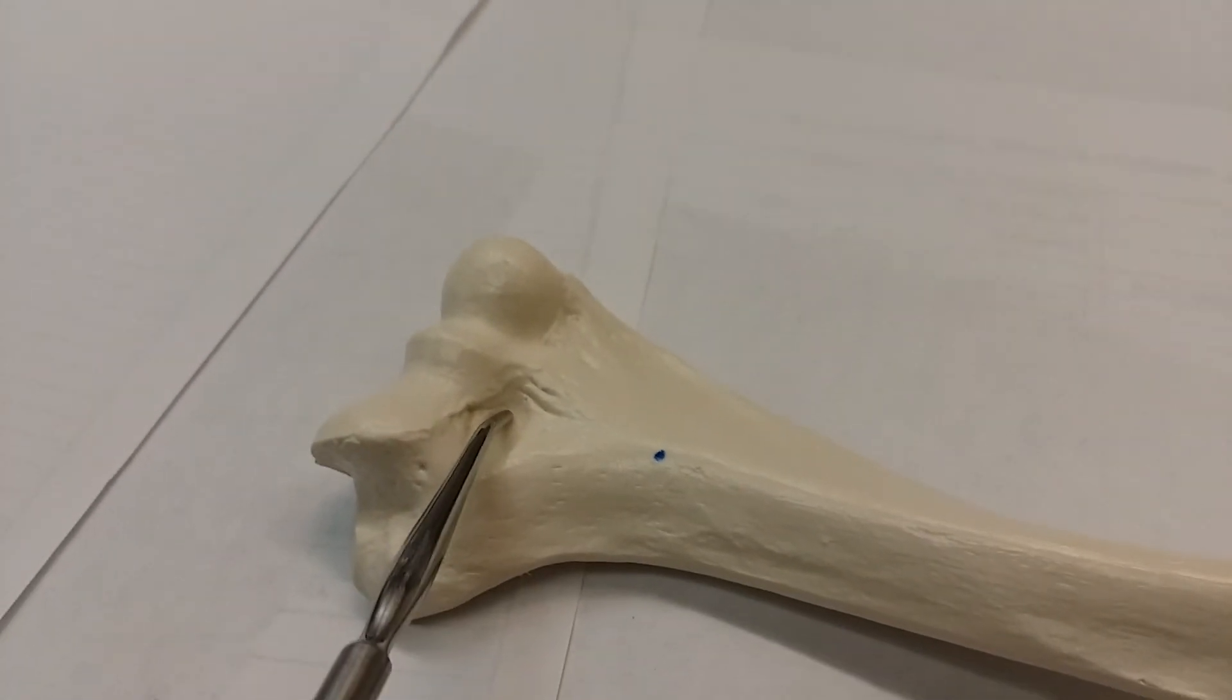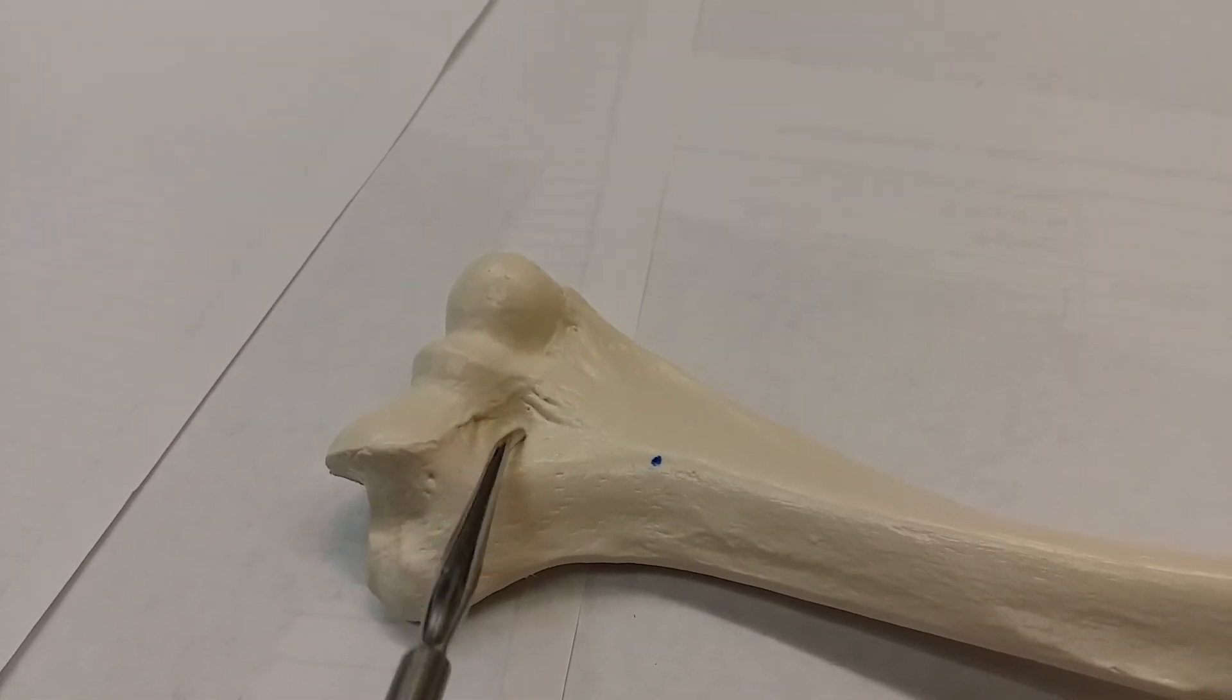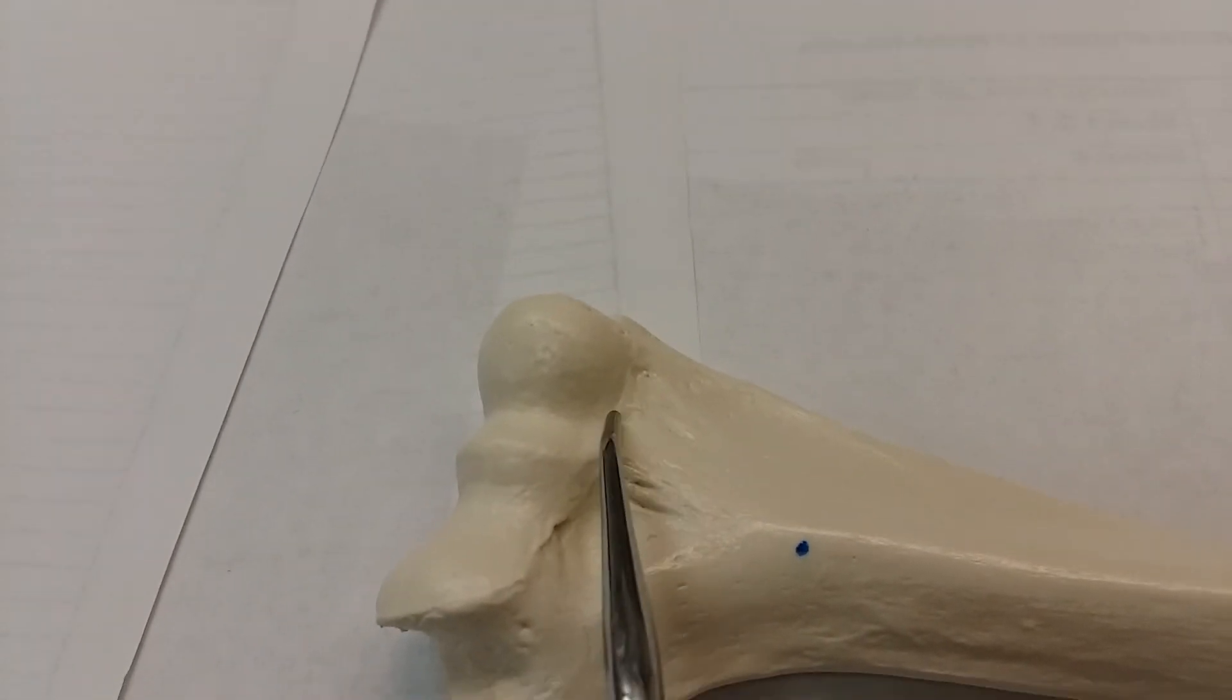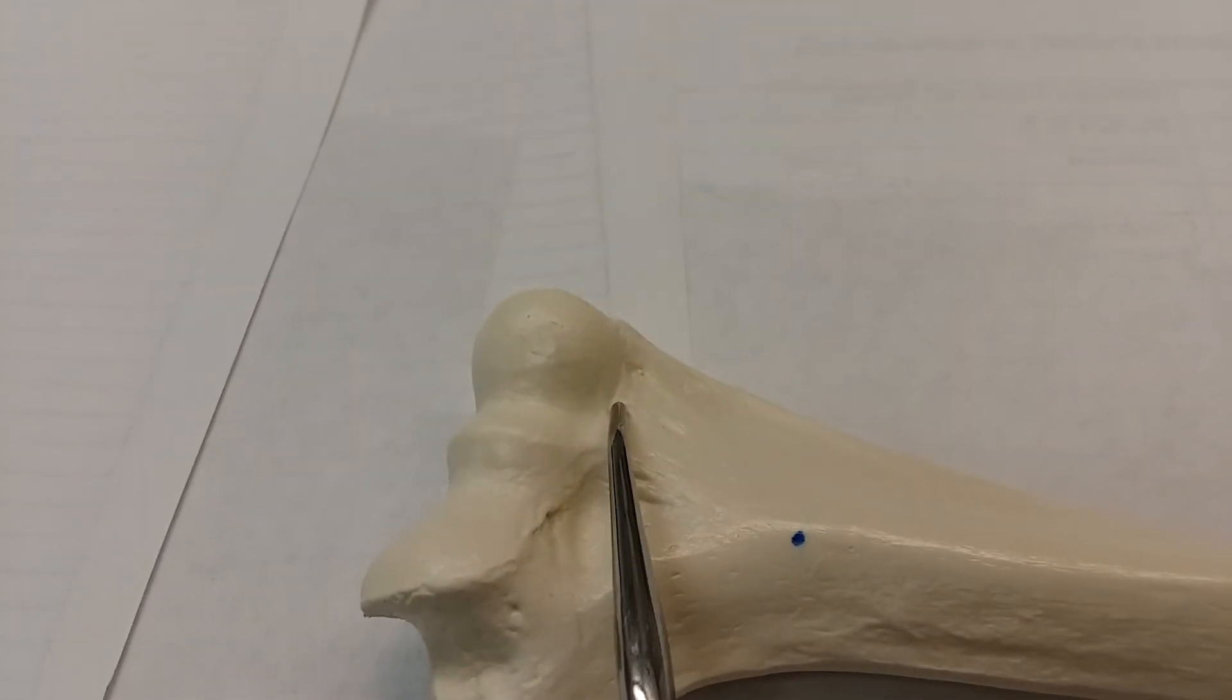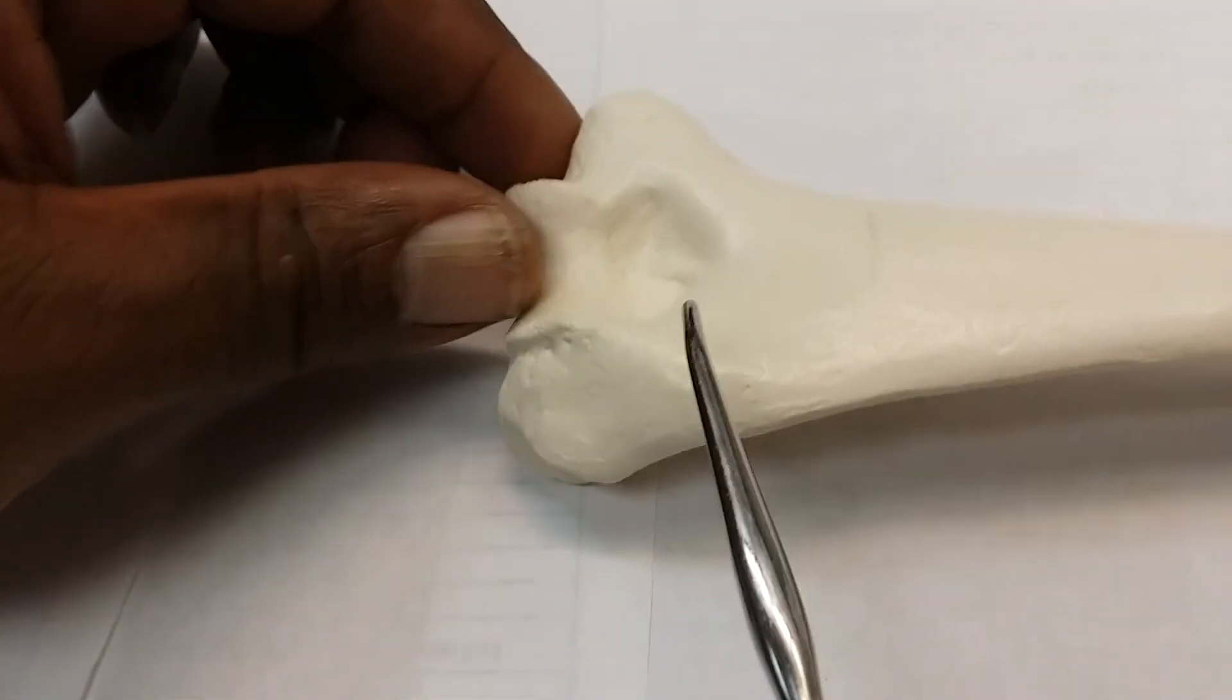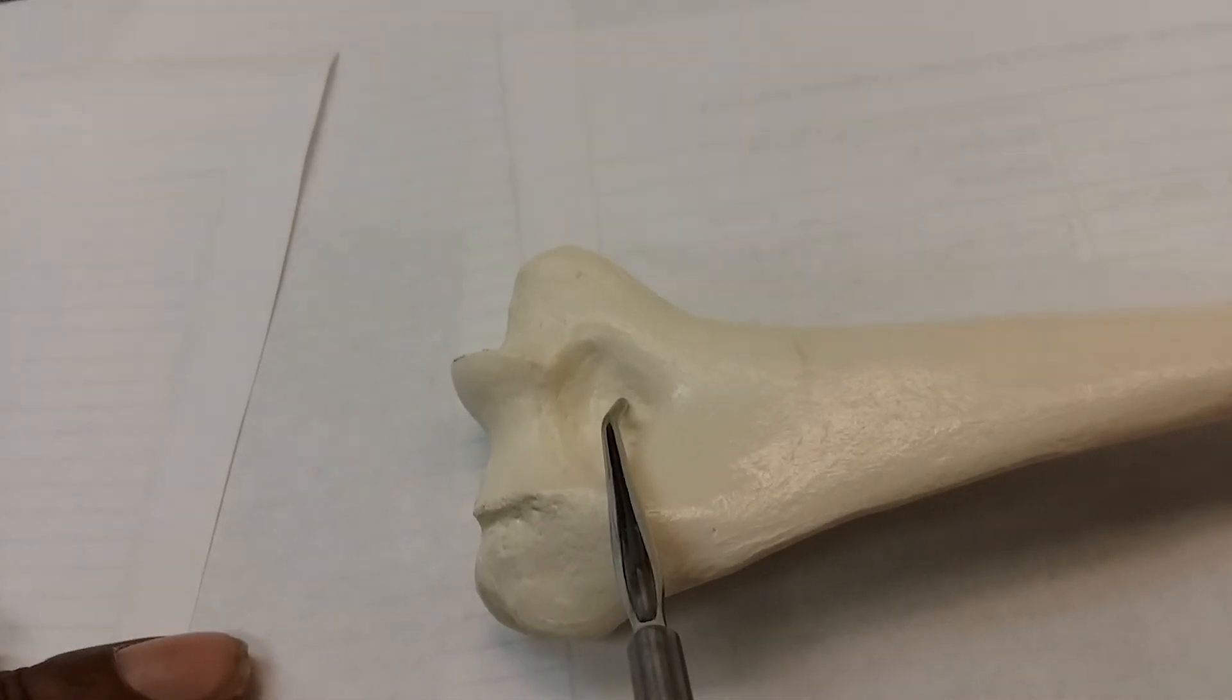Here is your coronary fossa, which is this impression right here. And this impression right here is called the radial fossa. Posteriorly, on the backside of the humerus, this impression right here is called the olecranon fossa.